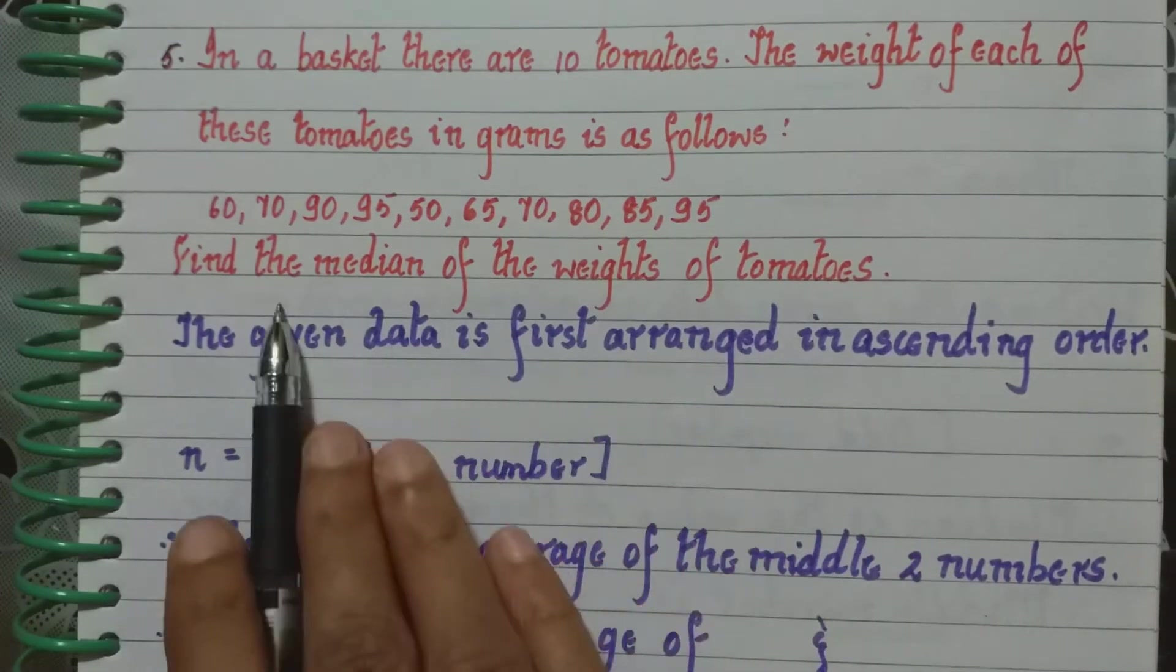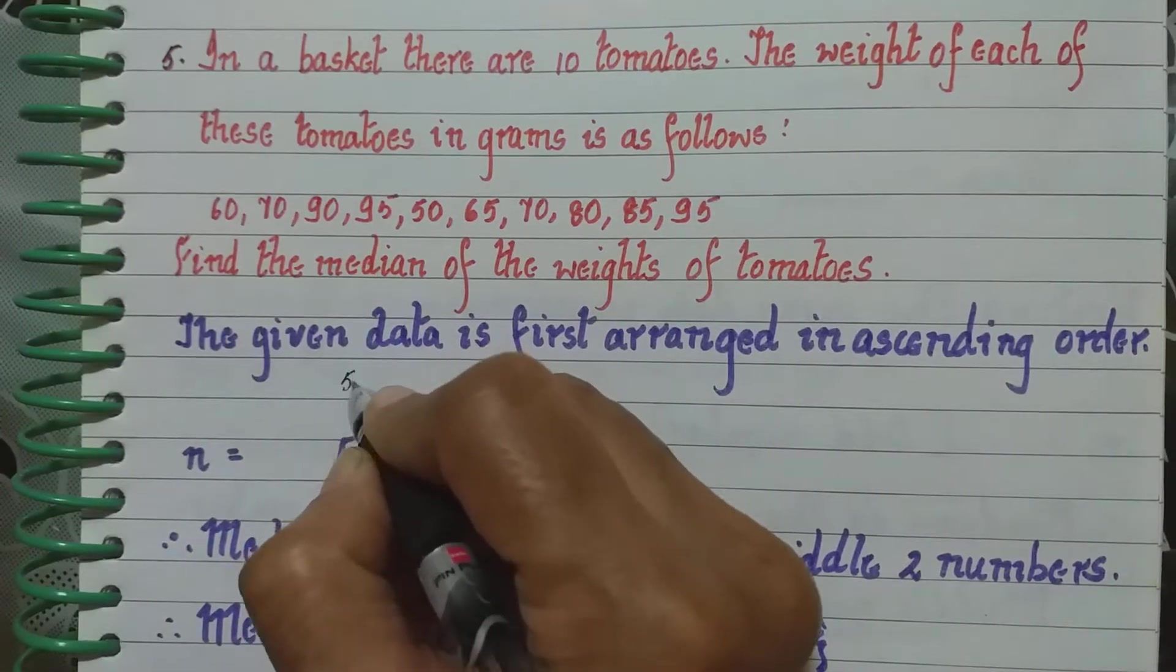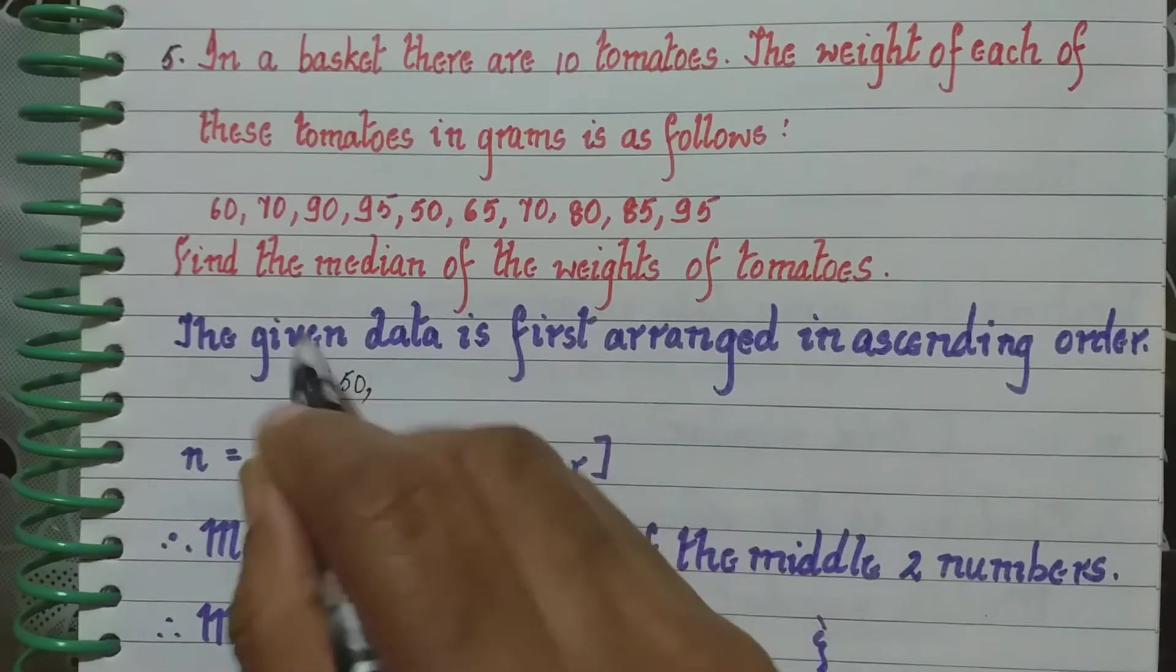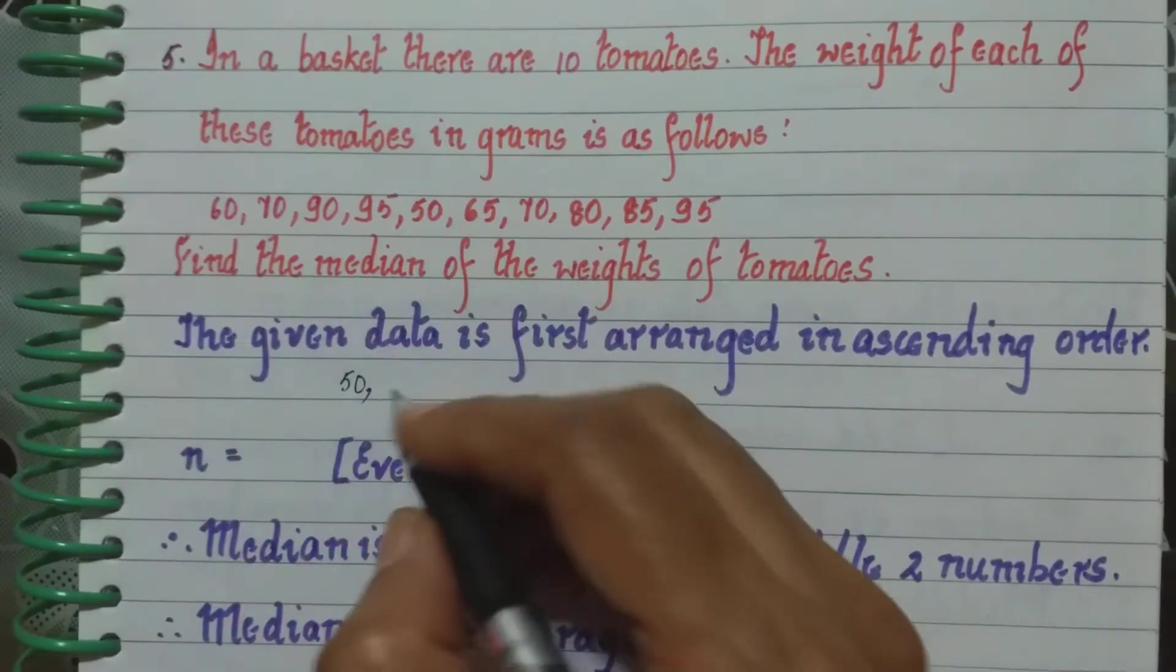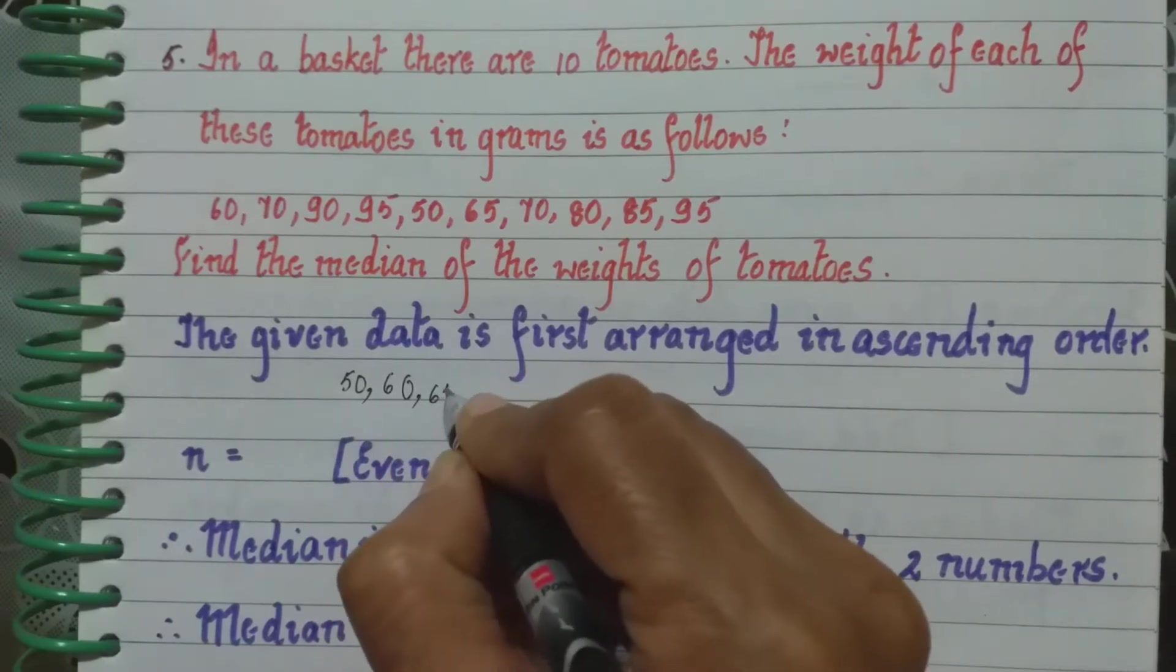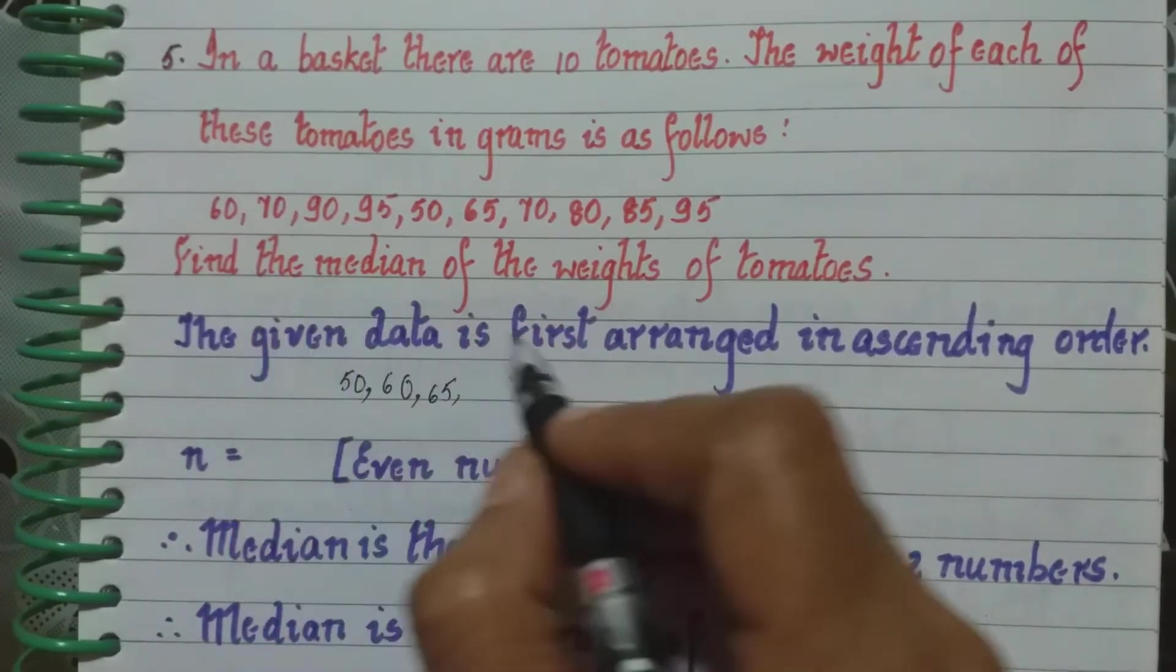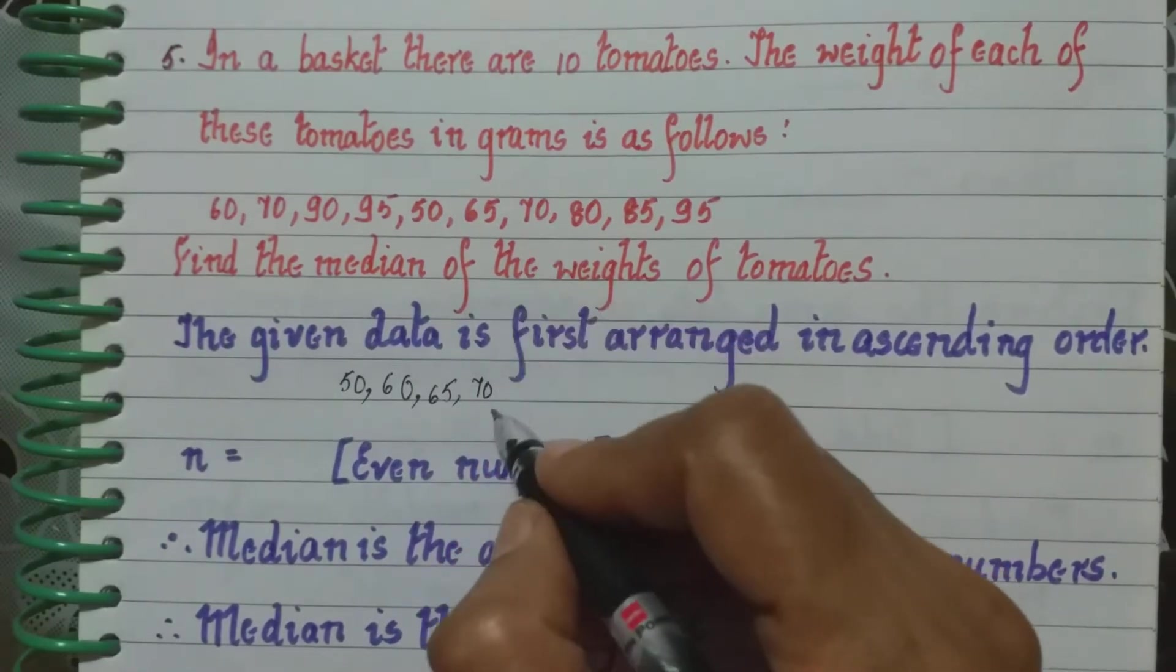Arranging in the ascending order, the smallest number here is 50. So we start with 50. Then we have 60 and then 65. So 60, 65. Then we have 70, which is repeated twice.